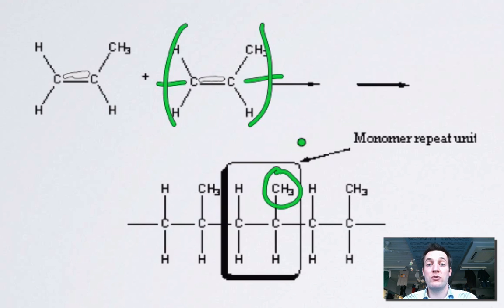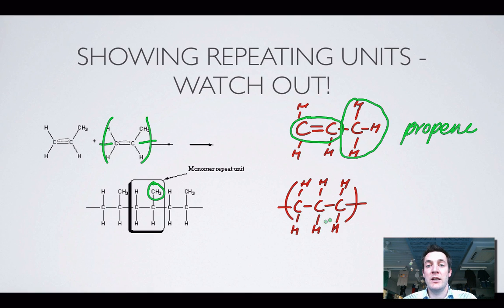But once again, if you are asked to draw three repeating units, then you ought to be drawing six carbons, not the nine that you would get if you thought this was your repeating unit.